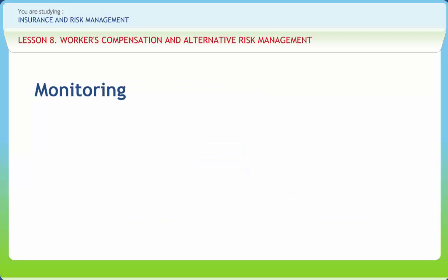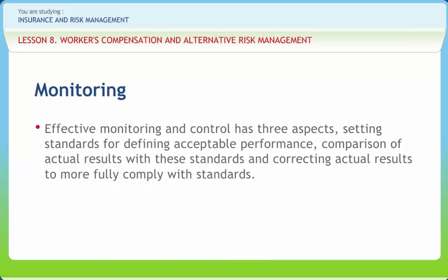After the selection and implementation of risk management techniques or controls, certain general results such as reductions in losses or in insurance premiums are expected. Techniques to monitor the results are imperative. Effective monitoring and control has three aspects: setting standards for defining acceptable performance, comparison of actual results with these standards, and correcting actual results to more fully comply with standards.